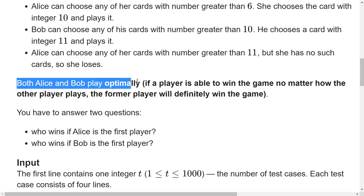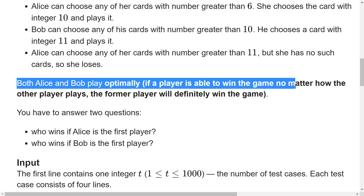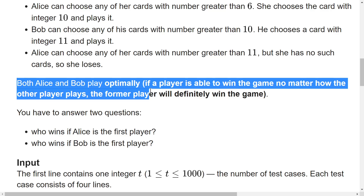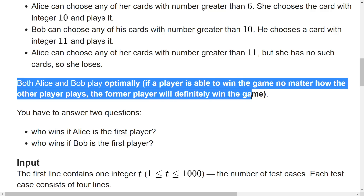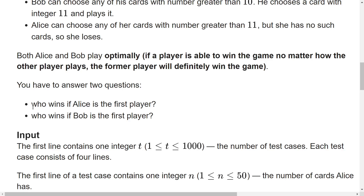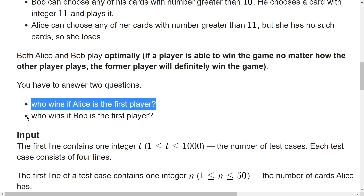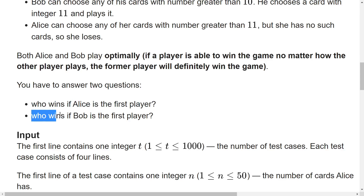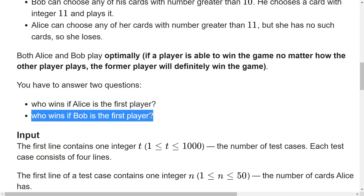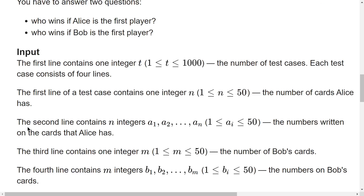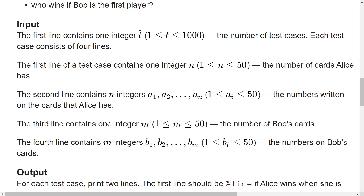Finally Bob wins. Both Alice and Bob play optimally — if a player is able to win the game no matter how the other player plays, that player will definitely win. We need to answer: who will win if Alice is the first player, and who will win if Bob is the first player.